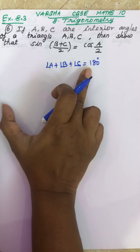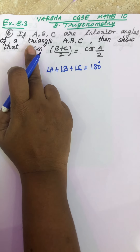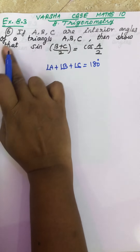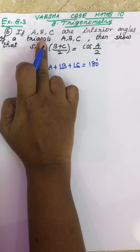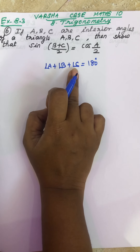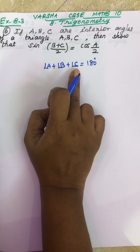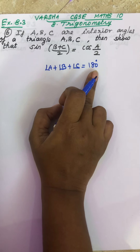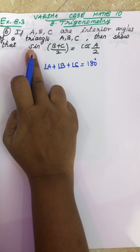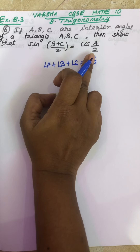This is the first step to write for the question. ABC are interior angles of a triangle, so when you add the three angles you will get 180 degrees. You have to prove that sin((B+C)/2) is equal to cos(A/2).